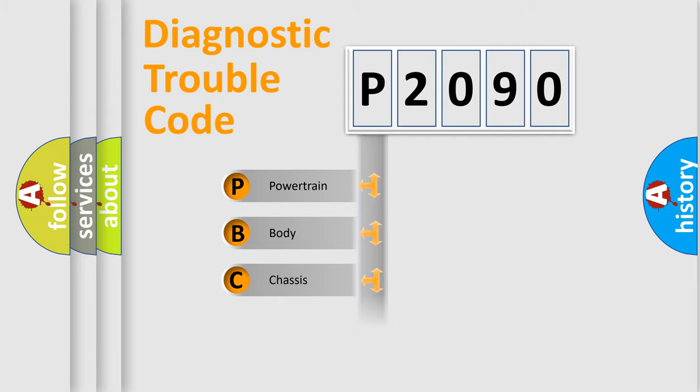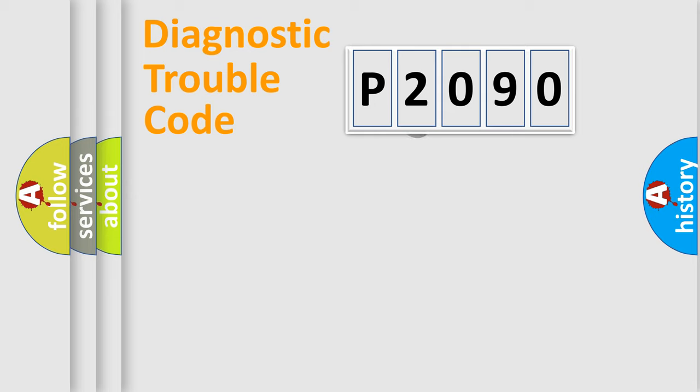Powertrain, Body, Chassis, Network. This distribution is defined in the first character code.